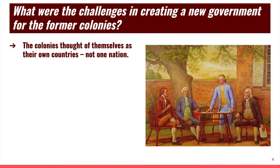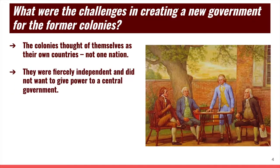The first thing to know is that the colonies still thought of themselves as their own countries, not as one nation. So when the war was over, you had 13 colonies that had 13 different ideas of what they wanted, and each one of them felt like they had a right to do what they wanted. There was no unifying national government to cause those colonies — now states — to think of themselves as being one country.